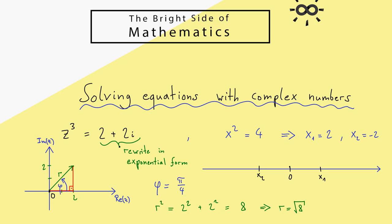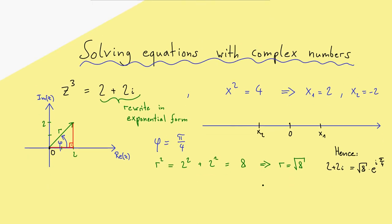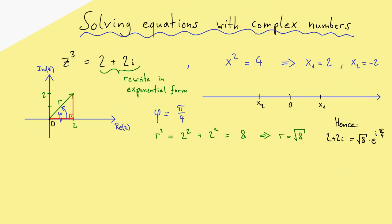To summarize, we rewrite the complex number 2 plus 2i in exponential form: it equals r times e to the power i times phi, which in our case is the square root of 8 times e to the power i times pi over 4. This is always helpful when considering powers in an equation, because calculating with exponents is much easier with the exponential function — you can simply multiply the exponents, regardless of how large the power is.